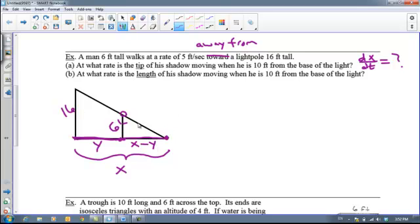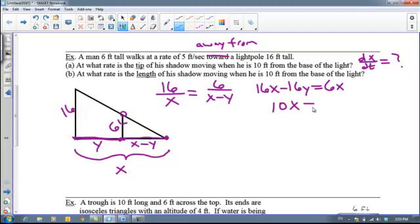So let's set up similar triangles. It is true that 16 over X must equal 6 over X minus Y. And so we can cross-multiply, and we can get that 16X minus 16Y equals 6X. So I'm going to move this over here, move this over here, do some algebra. Yay. So 10X is equal to 16Y. And so I can divide both sides by 10, and I can get that X equals 16 over 10, which I think reduces to 8 fifths Y.